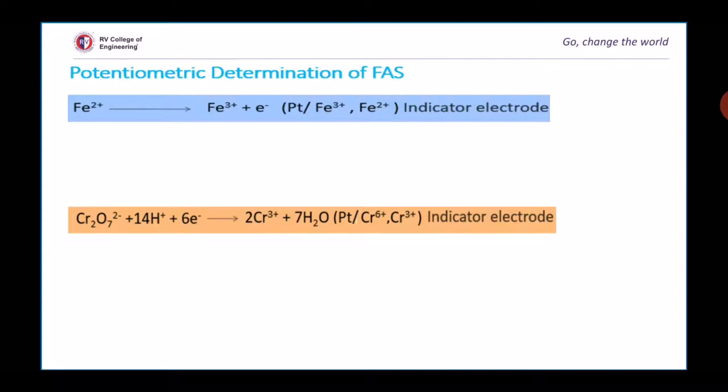If you apply the Nernst equation to this, it comes out to be: E = E° + 0.0591/n log([Fe³⁺]/[Fe²⁺]).